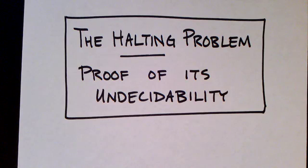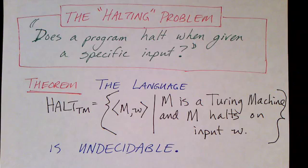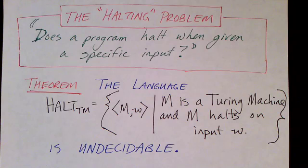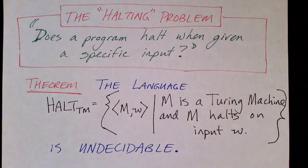In this video we're going to describe the halting problem and provide a proof of its undecidability. This will be our first example proof using the technique of reducing. The halting problem is the problem of determining whether a given program will halt when given a specific input — given a program and an input, will that program ever stop or will it loop forever?